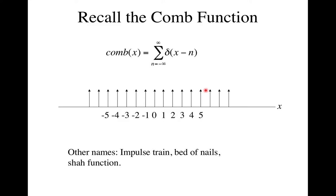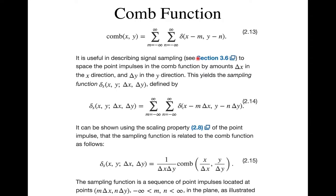We'll now look at this mathematically using a couple of functions. Recall that the comb function is a set of delta functions arrayed on the x-axis in one dimension — a continuous function of a continuous variable x. If it's just comb(x), we have delta functions at integer values 0, ±1, ±2, ±3, etc., written as a sum of delta functions whose peak is shifted by an integer number. It can be written in two dimensions similarly, and from it we derive the sampling function, which is just a scaled version placing the delta functions on a continuous grid with separation m·delta_x and n·delta_y.